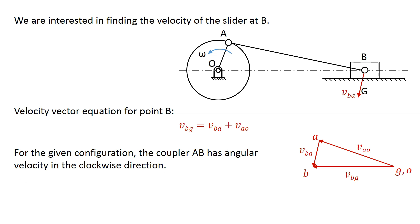As indicated by the vector diagram, for the given configuration, the coupler AB has angular velocity in the clockwise direction. Its magnitude equals the magnitude of velocity of B relative to A, which can be measured from the velocity diagram, over the length of the link AB.